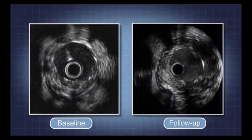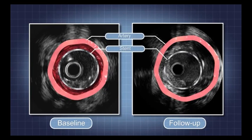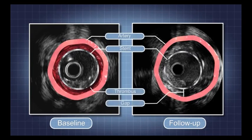These two IVUS images of a real acute coronary case show from inside the vessel lumen how a stent which appears well deployed on the left hand side resulted in a gap between the stent and the vessel wall after 13 months, as shown on the right hand side.